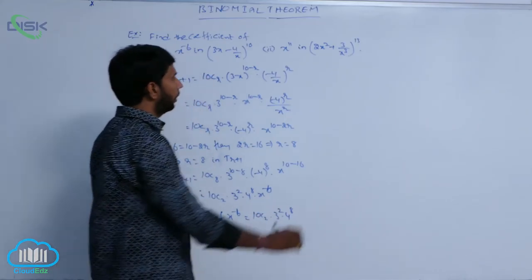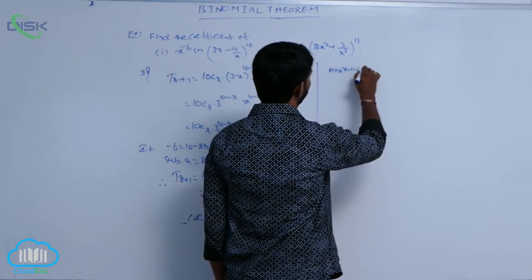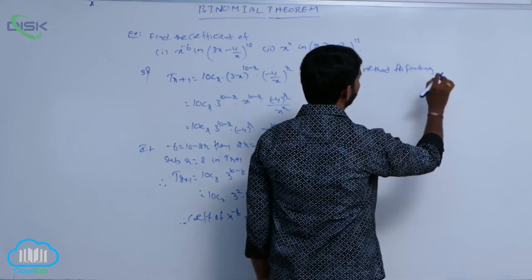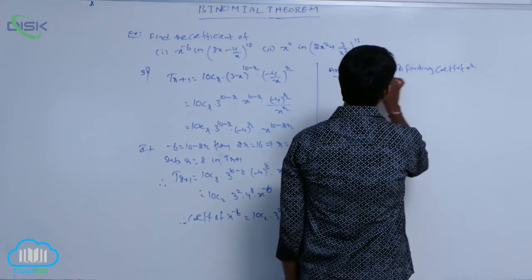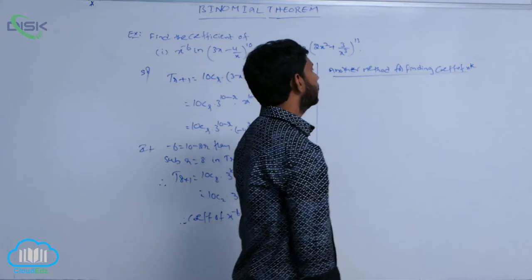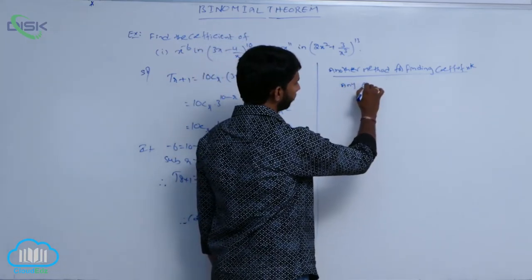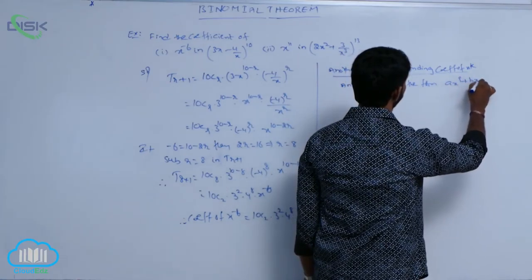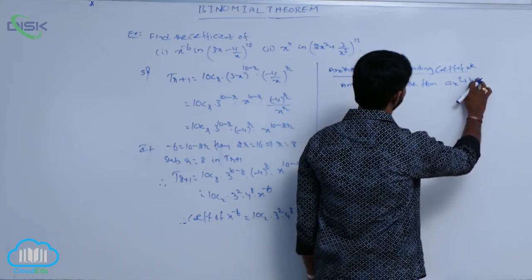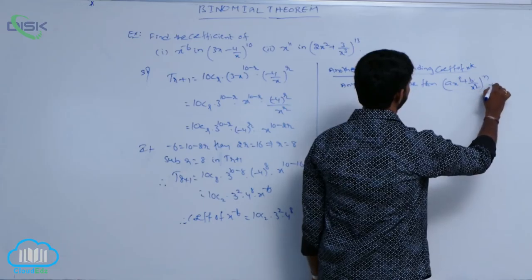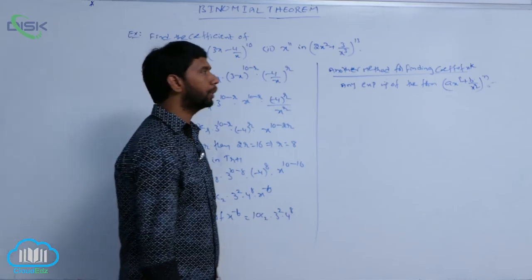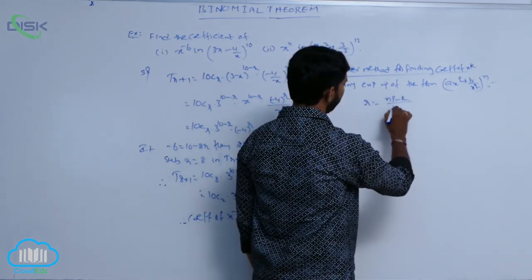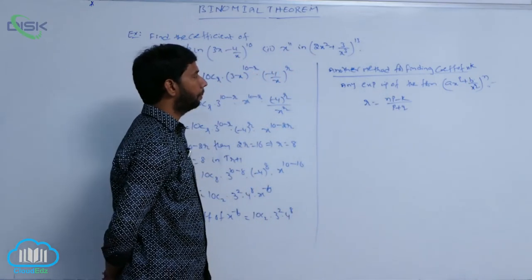This is one method. Another method for finding the coefficient of x power k: if any expansion is of the form (ax power p + b/x power q) whole power n, then r is equal to (np minus k) divided by (p plus q).